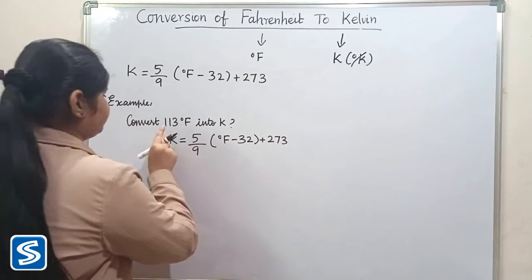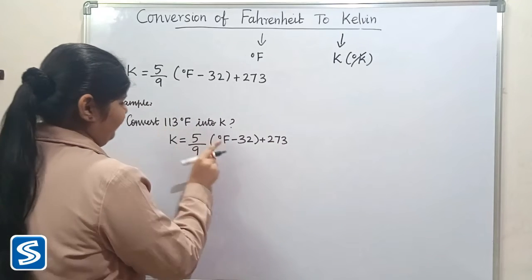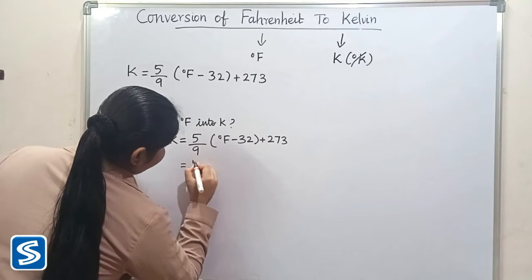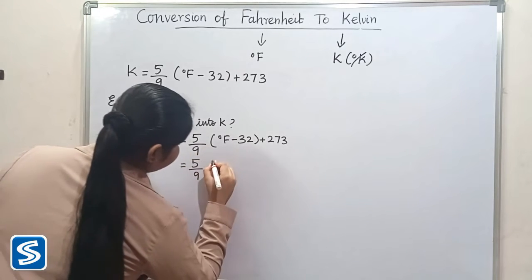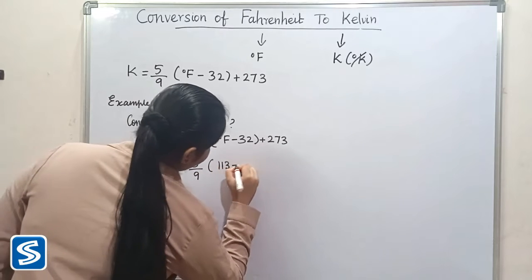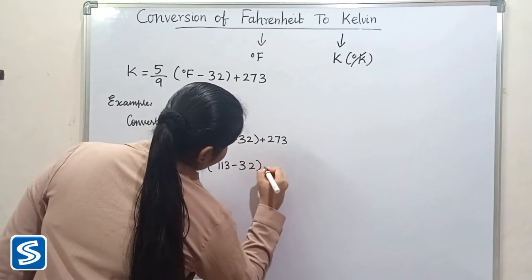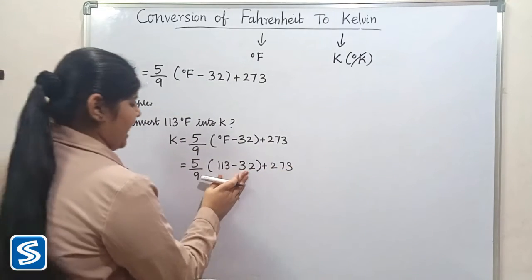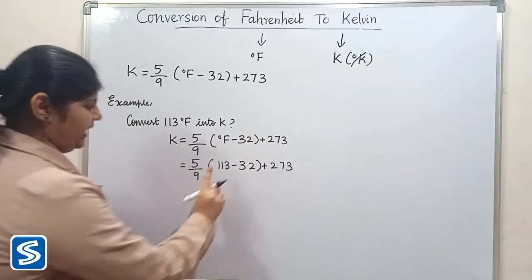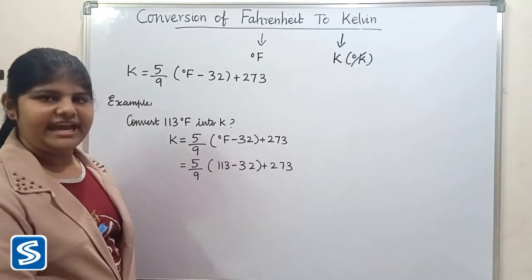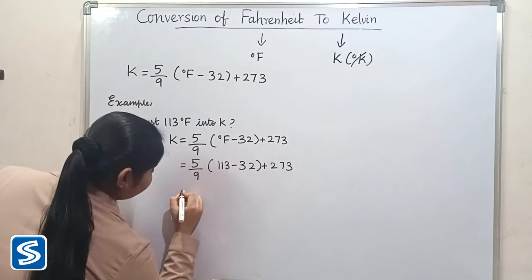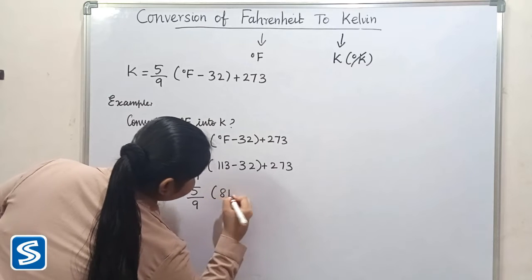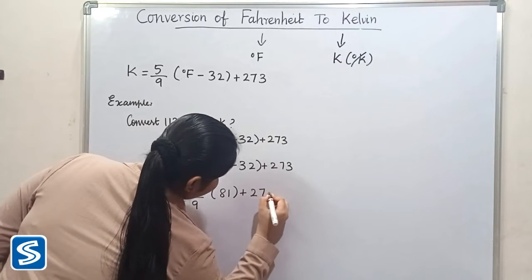Now we substitute 113 in the place of degree Fahrenheit: (5/9) × (113 − 32) + 273. First, we simplify the brackets: 113 minus 32 equals 81. So we have (5/9) × 81 + 273.